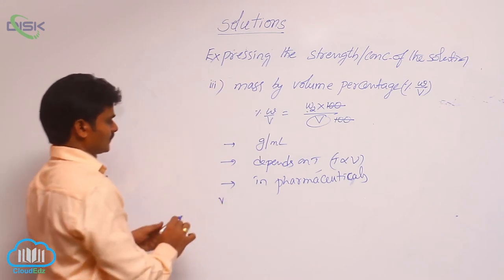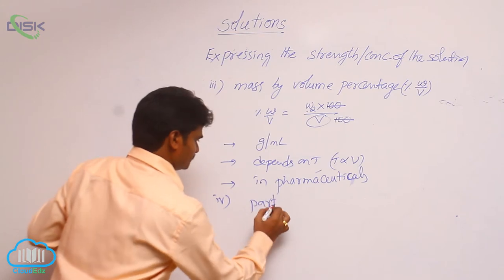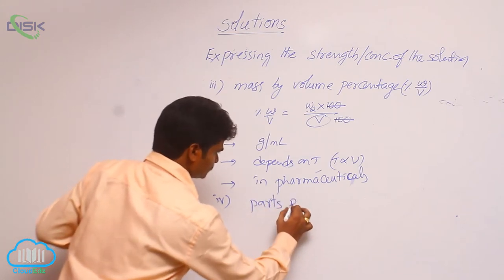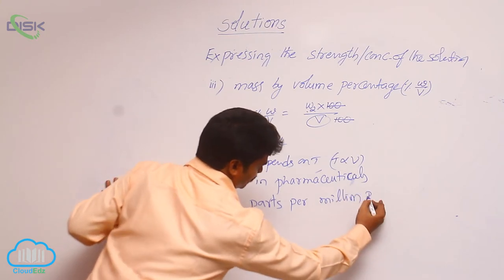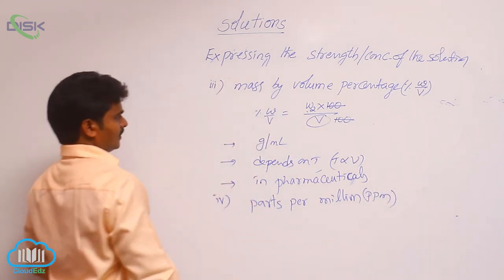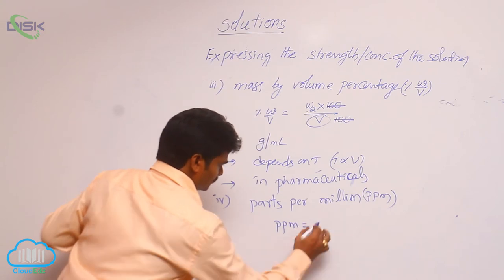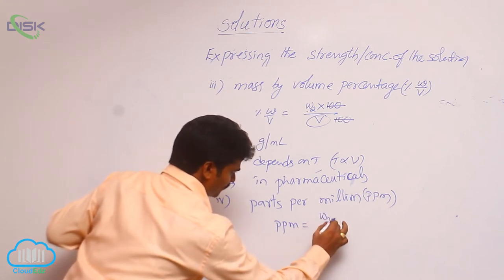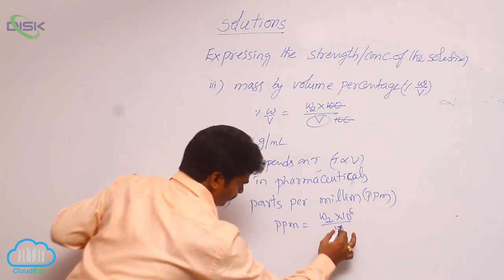Next, fourth one. Parts per million. Parts per million, denoted by ppm. See its formula. Ppm is equal to weight of solute into 10 power 6 by weight of solution.